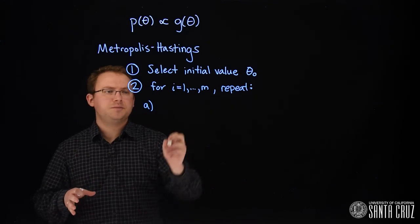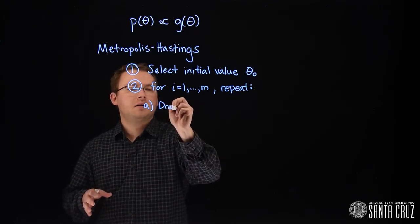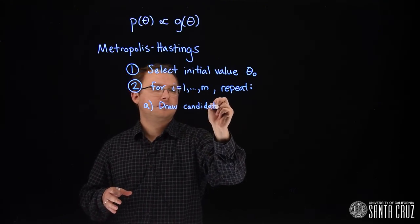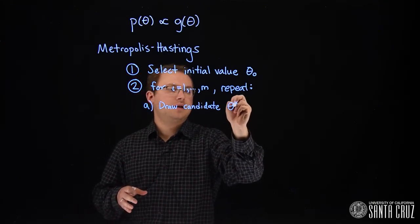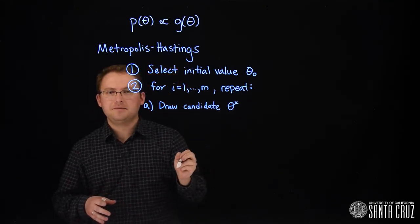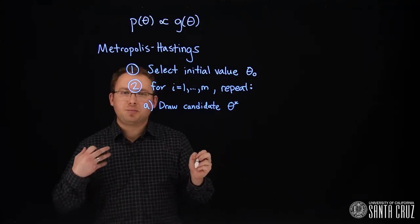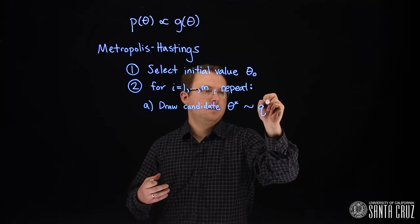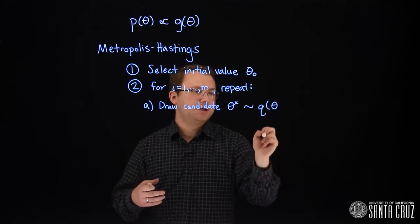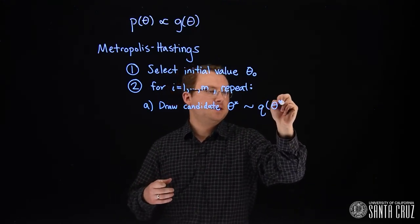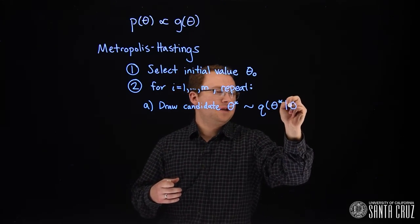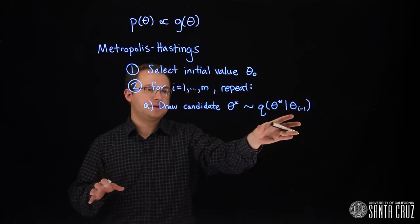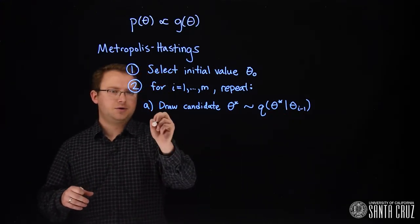The first thing we're going to do is draw a candidate. We'll call that theta star as our candidate. And we're going to draw this from a proposal distribution. We're going to call the proposal distribution q of theta star given the previous iteration's value of theta. We'll talk more about this q distribution soon.